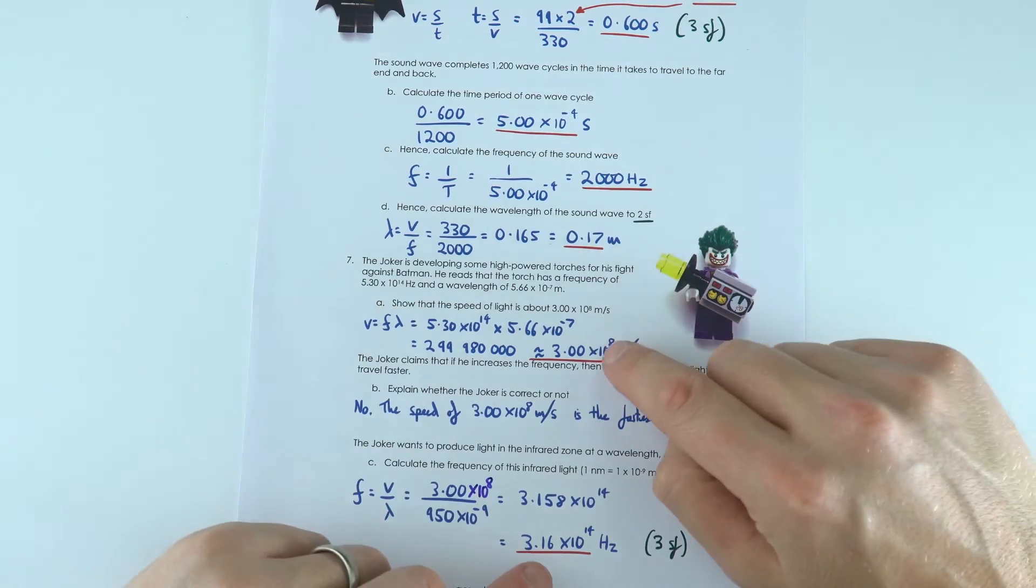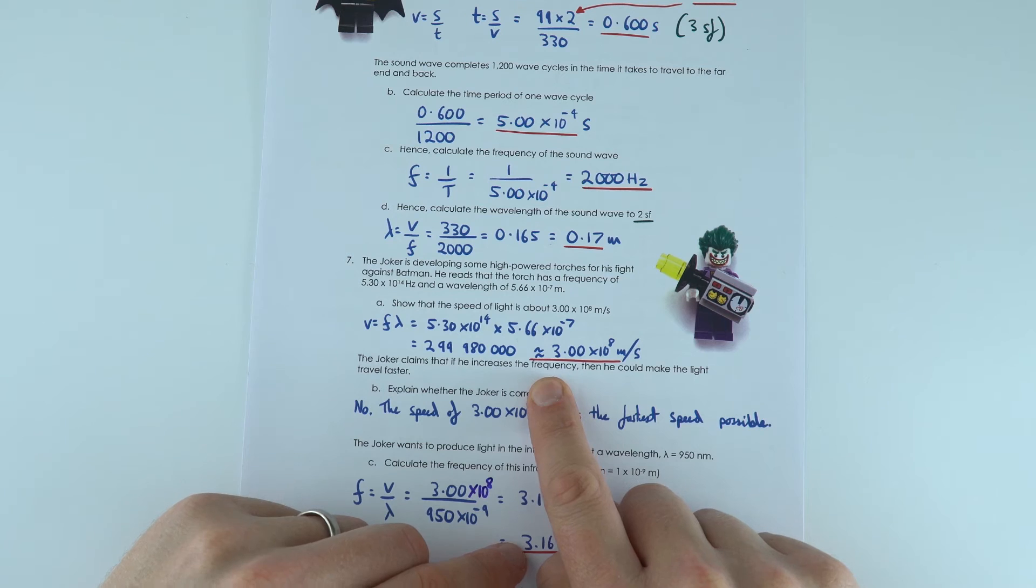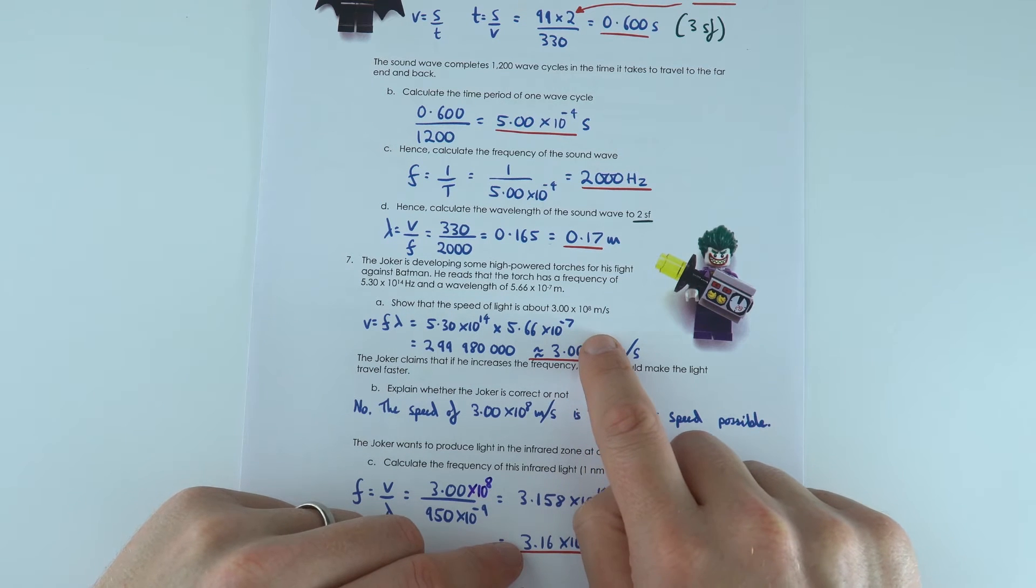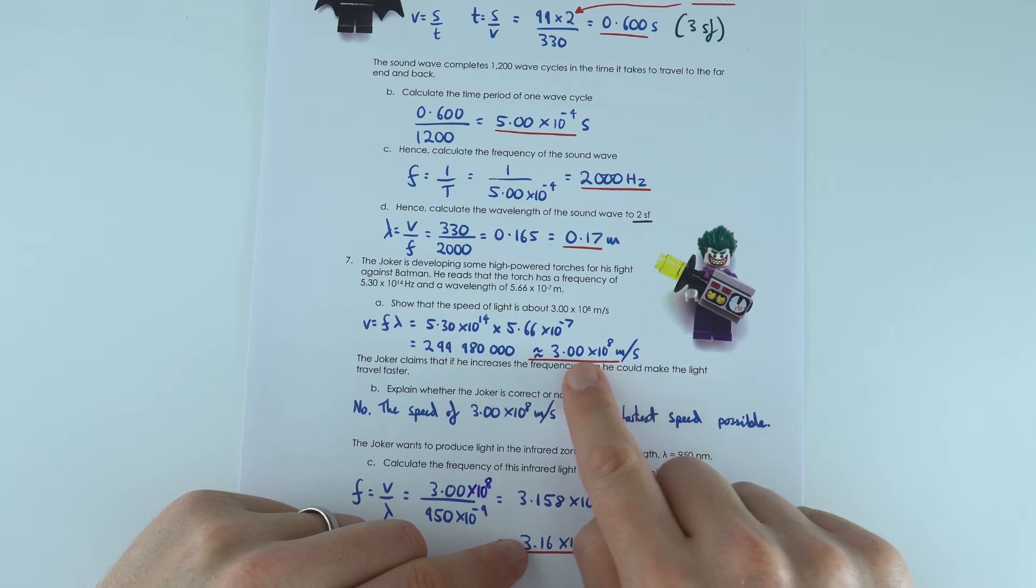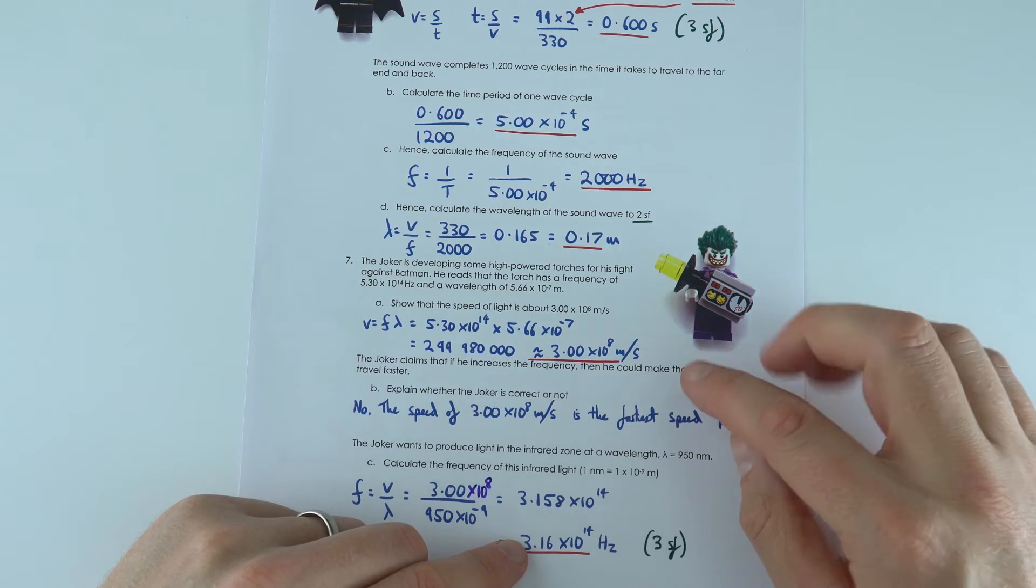The physics gets really weird, but that means that if you increase the frequency, we don't increase the speed of the wave. Instead, what happens is as you increase the frequency, the wavelength would actually get smaller. So 3 times 10 to the 8 is the fastest speed possible.